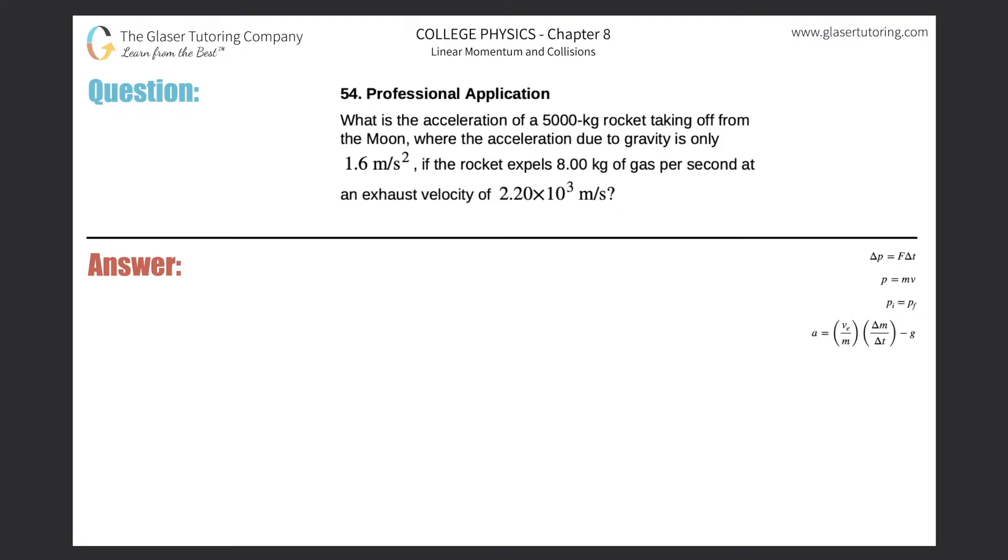Number 54, professional application. What is the acceleration of a 5000 kilogram rocket taking off from the Moon, where the acceleration due to gravity is only 1.6 meters per second squared, if the rocket expels 8 kilograms of gas per second at an exhaust velocity of 2.2 times 10³ meters per second?